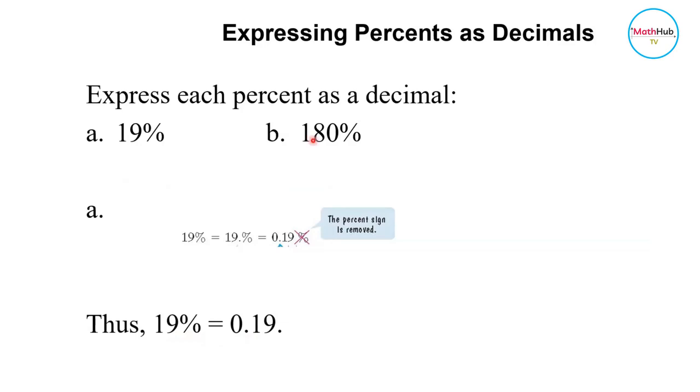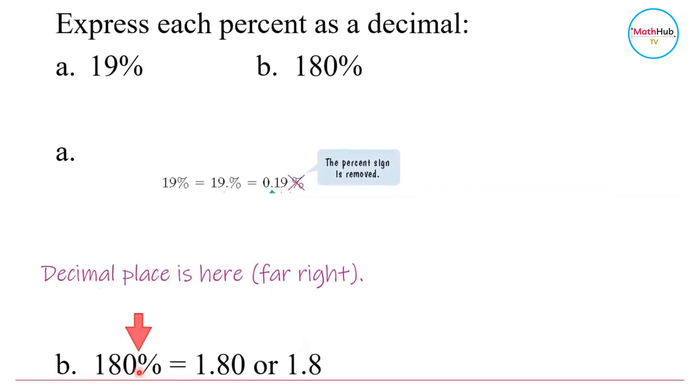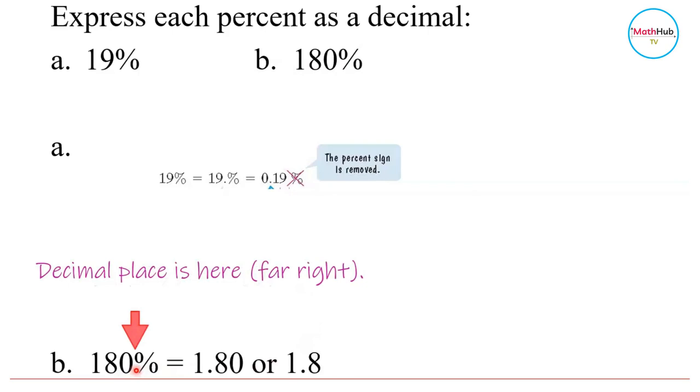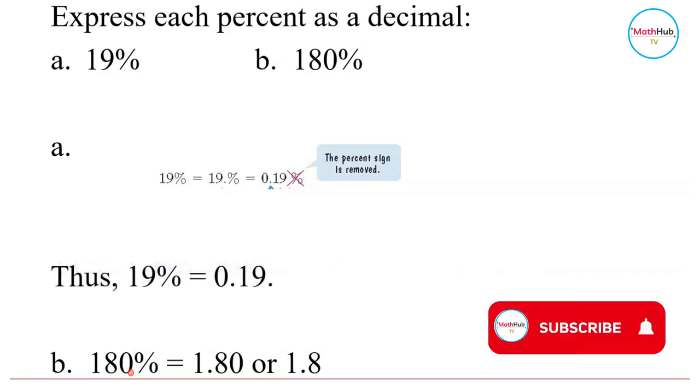Similarly, if you have 180%, all you need to do is put a decimal point right after the last digit. Then move it two places to the left.